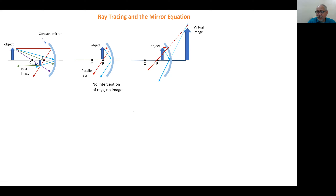How can we detect that the image is virtual? The image is virtual if it is upright with respect to the object. If the image is upside down (inverted) with respect to the object, the image is real.